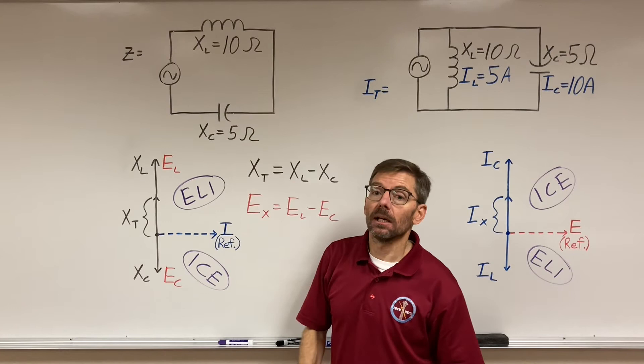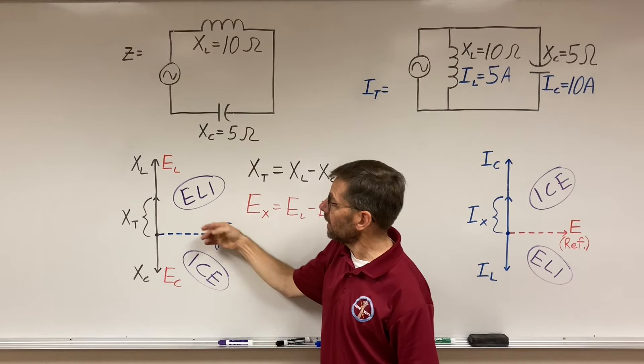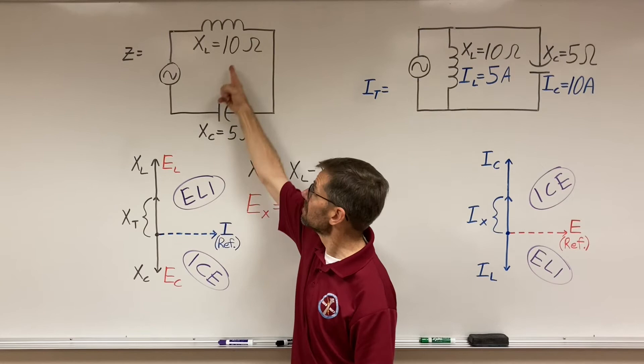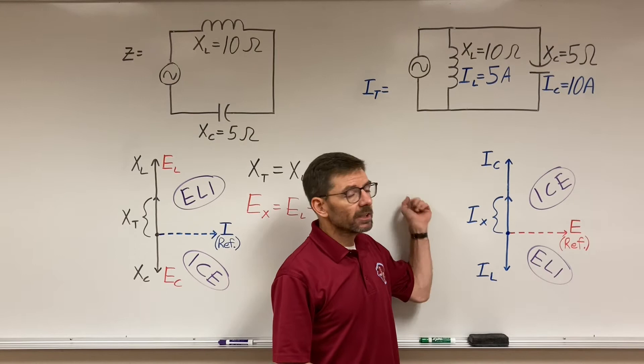It's pointing up into inductive territory. So from the source, this circuit looks inductive. The capacitor just counteracts for half of the effect of the inductor, but from the source, it just sees an overall inductance, pointing in inductive territory, of five ohms, 10 minus five. So at the source, it sees a circuit that looks just like an inductor with five ohms.